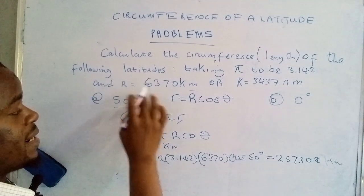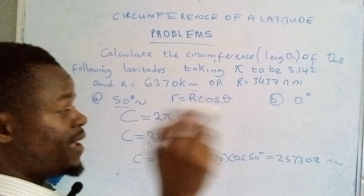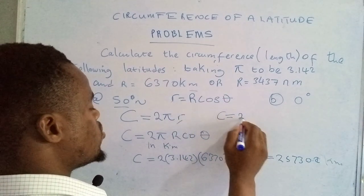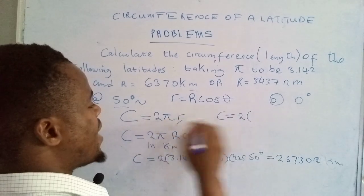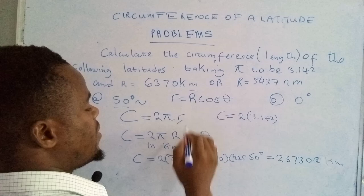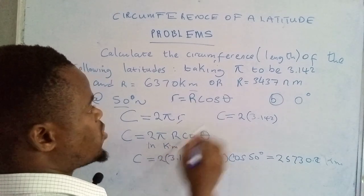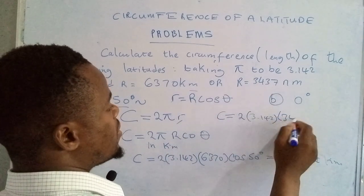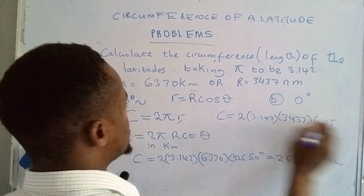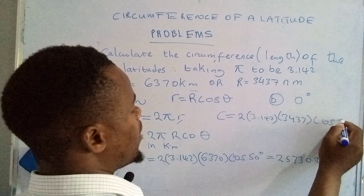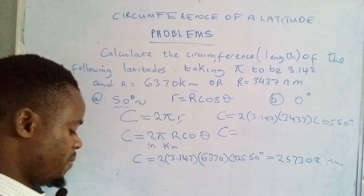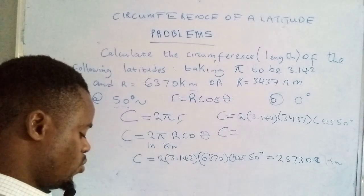We determine the circumference of this latitude in nautical miles. So it would be circumference is equal to 2π, that's 3.142, then the radius will be this one, 3437, and then cos the same angle which is 50.